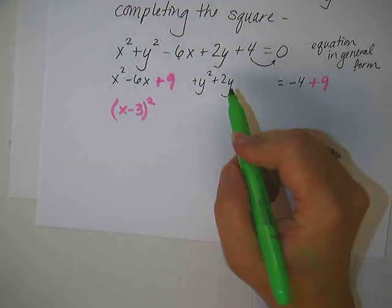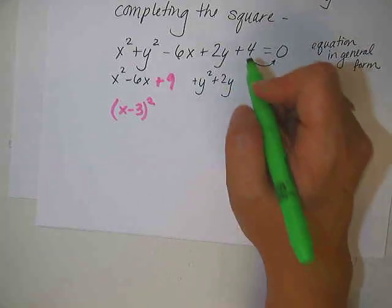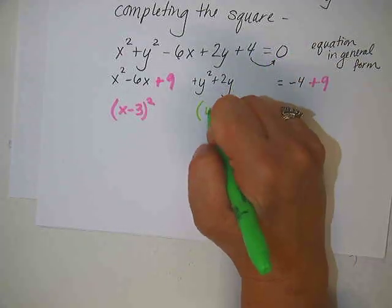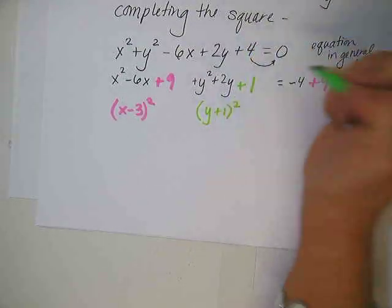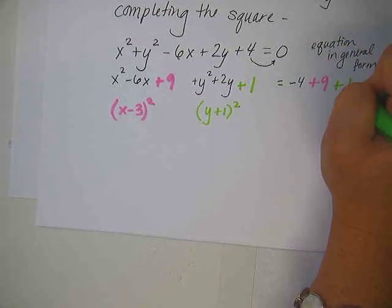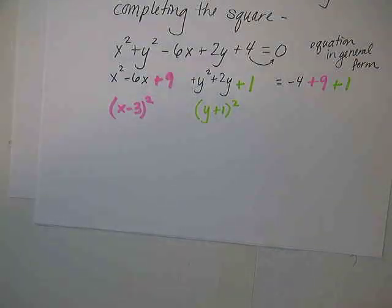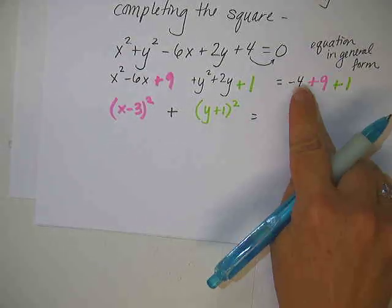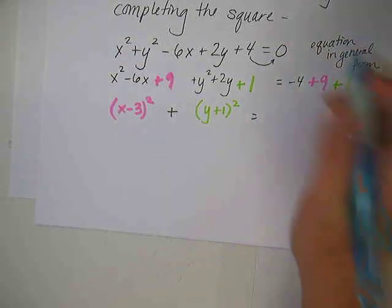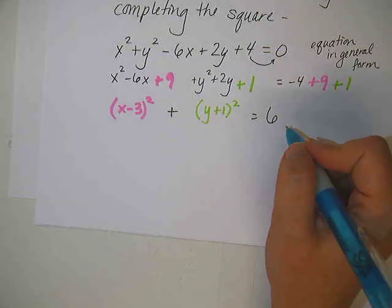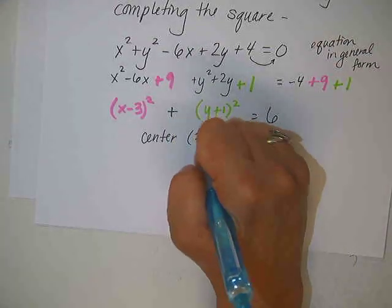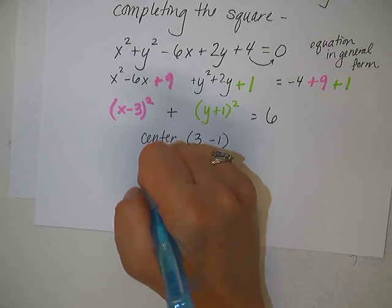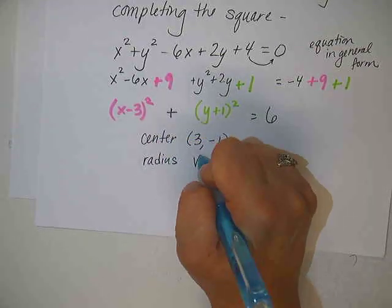So half of negative 6 is negative 3. So that means when we factor this, this is going to be an x minus 3 squared. Well, what is negative 3 squared? Positive 9. But what I add to one side, I have to add to the other side. Now we take the b value on the y squared, so the number that's just next to the y, and we half that. What's half of 2? 1. So in here, we would have y plus 1 squared, and what's 1 squared? 1 squared is 1. So if what we add to one side, we have to add to the other side.